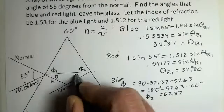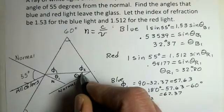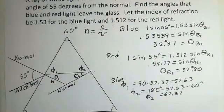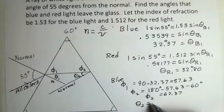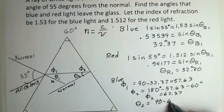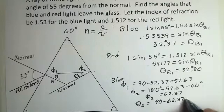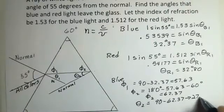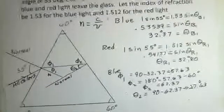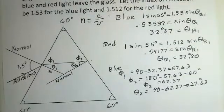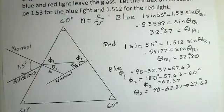And now, theta 2, the angle of this ray from the normal inside the glass. The theta 2 is going to be 90 minus 62.37. And I came up with 27.63 degrees. And my drawing is maybe accurate, maybe not. So, 27.63 degrees would be theta 2 that we'll use for the calculation. If we do a similar technique for the red, I'll put it over here.